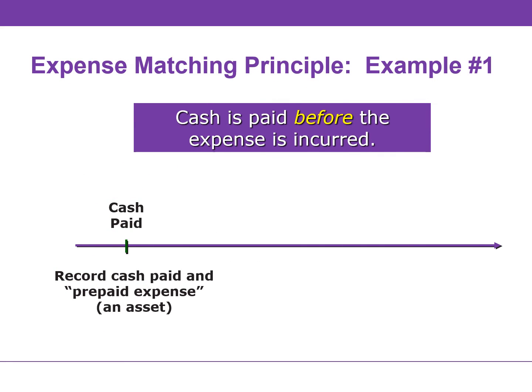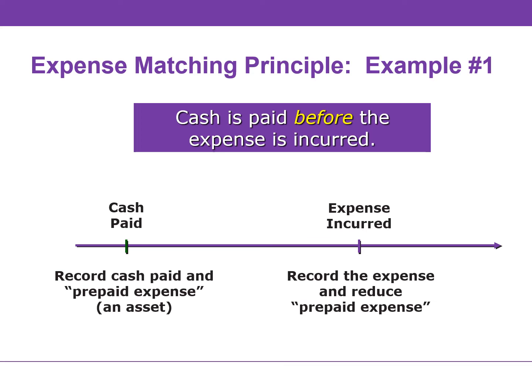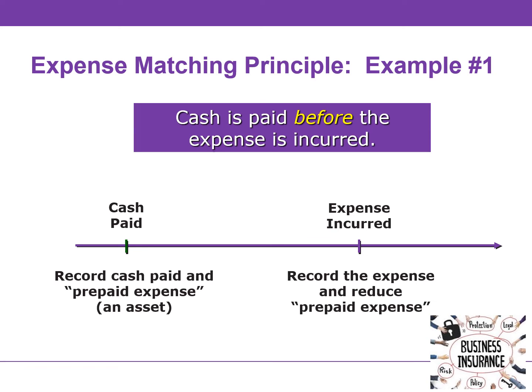If cash is paid before the expense is incurred, the company establishes a prepaid expense, which is an asset account. In this transaction, prepaid expense will increase and cash will decrease. When the expense is incurred, we increase the expense account and decrease the asset account prepaid expense. A great example is prepaid insurance. Companies often pay in advance for multiple periods; the premiums paid in advance are recorded as an increase in prepaid insurance, an asset. The second part of this transaction increases insurance expense and decreases prepaid insurance for the cost of insurance that has expired during the period.